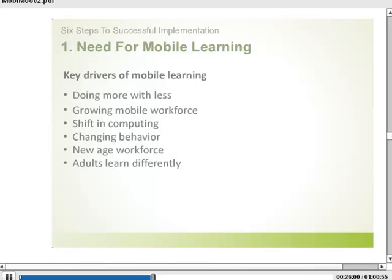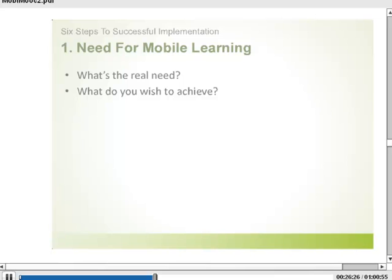Adults learn differently — they need to have a purpose. They really learn when they get stuck or are forced to learn. If you give them large chunks of information, a lot of them would forget it. There is an opportunity to space out learning with mobile devices. So these were the key drivers, but coming back to the need for mobile learning: when you are implementing mobile learning in the workplace, you need to identify your real need — what you wish to achieve — not just because everybody is doing it.